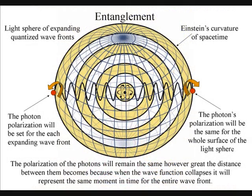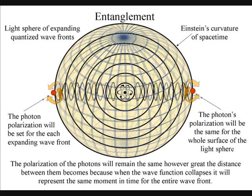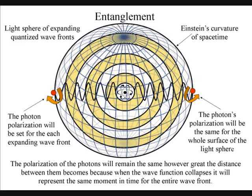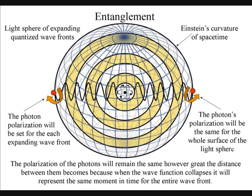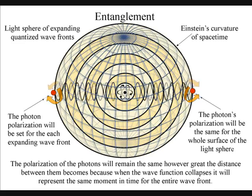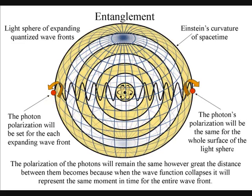We have entanglement because the polarization will be set at the creation of each expanding wave-front. The wave-front will expand in the form of a light sphere, and the polarization will be the same for the entire surface of the light sphere, no matter how large it becomes.